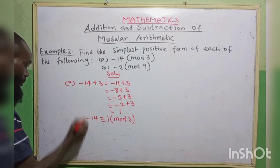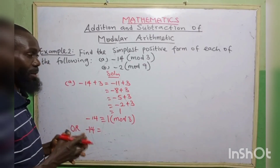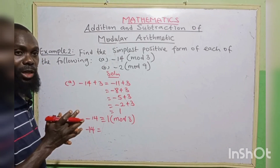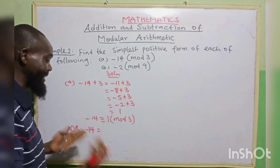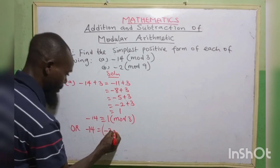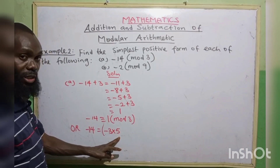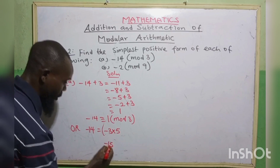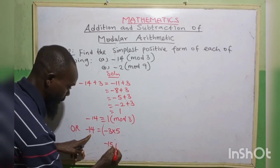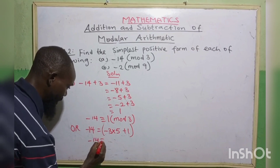Alternatively, find two numbers you can multiply together — including the modulo 3 — that give a result greater than 14. For example, minus 3 multiplied by 5 gives minus 15. What can we add to minus 15 to get minus 14? That is plus 1. So we write plus 1, and this 1 is our answer in modulo 3. Minus 14 is equivalent to 1 in modulo 3.